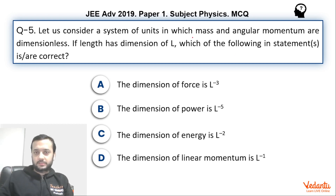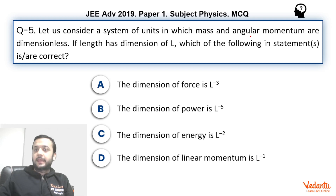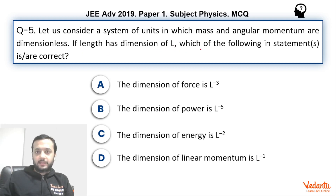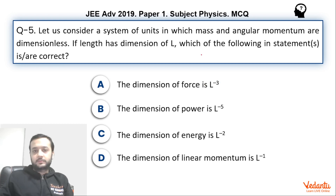In this question, there is a system of units in which the dimension of mass and that of angular momentum is M0 T0 L0, meaning they are dimensionless. Length has the usual dimension of capital L. We have to find the dimensions of force, power, energy, and linear momentum in terms of L.